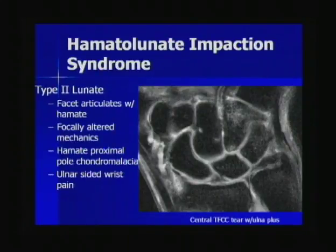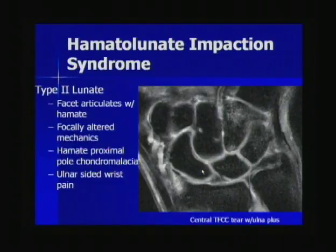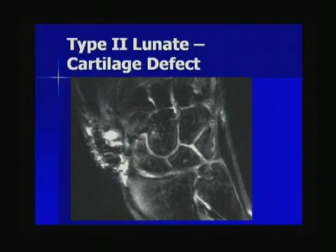Hamate-lunate impaction syndrome occurs with a type 2 lunate, where there's an extra facet on the lunate that articulates with the hamate — found in approximately 50% of patients. It results in focally altered mechanics with axial loading, leading to proximal pole chondromalacia of the hamate and is a common cause of ulnar-sided wrist pain or carpal arthritis. An example shows the separate articular facet on the lunate articulating with the hamate, with a small cartilage defect along the proximal pole of the hamate.